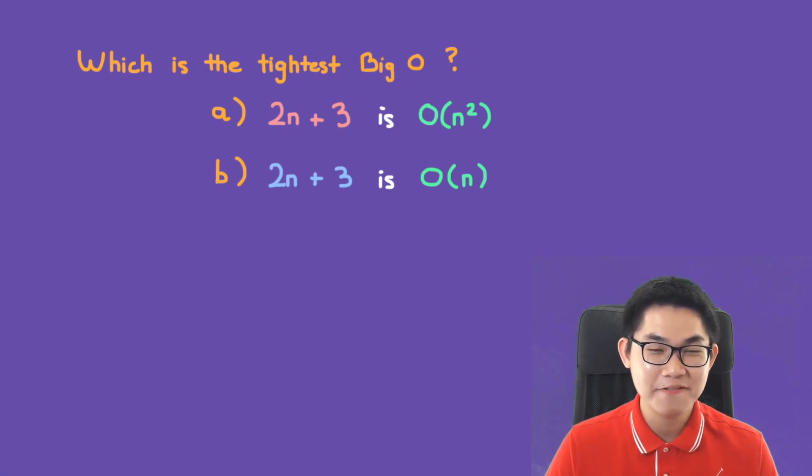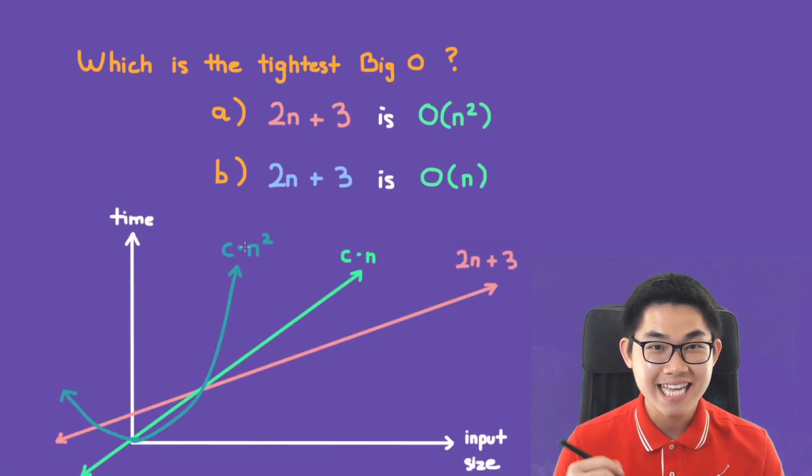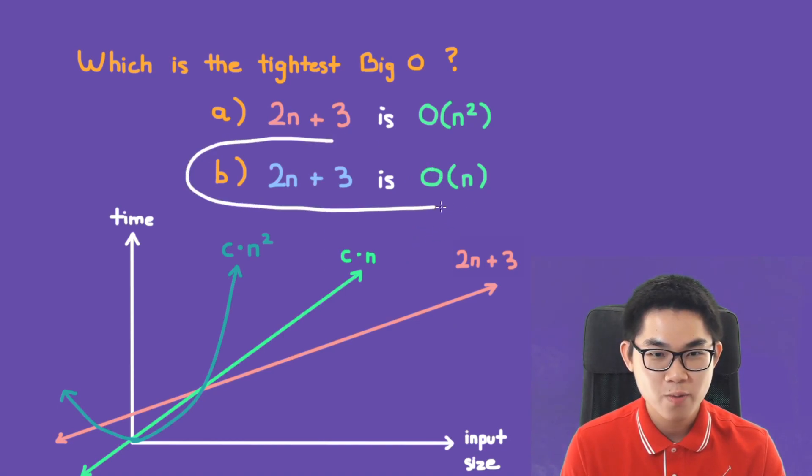We just established that 2n plus 3 is O(n²), but it can also be O(n). On the test, a question might ask you which one is the tightest big O? So which one do we choose? The tightest big O is the answer that is closest to our original function, which is O(n). So this right here will be the answer.